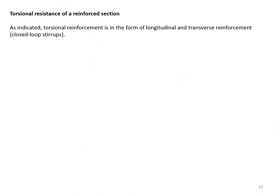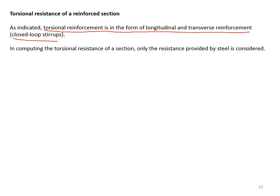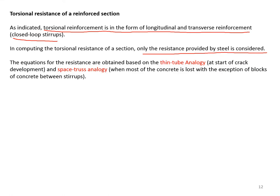Torsional reinforcement is in the form of longitudinal and transverse reinforcement — closed loop stirrups. In computing torsional resistance, only the resistance provided by steel is considered; the concrete contribution is ignored. The equations for resistance are obtained based on the thin tube analogy, which applies at the start of crack development, and the space truss analogy, which applies at the extreme condition when most of the concrete is gone.